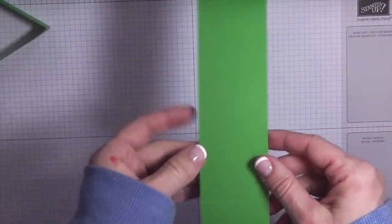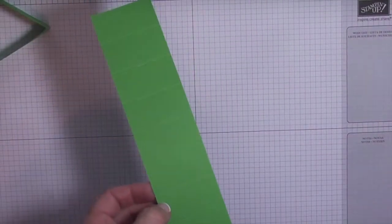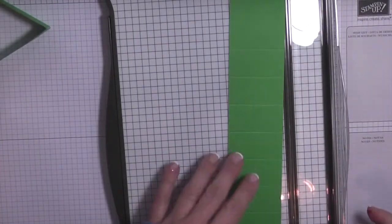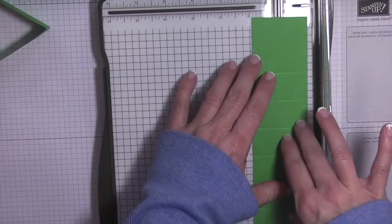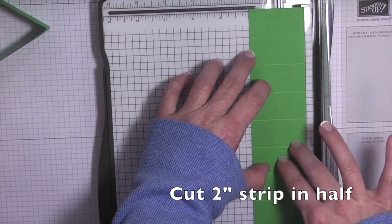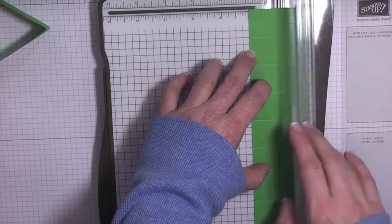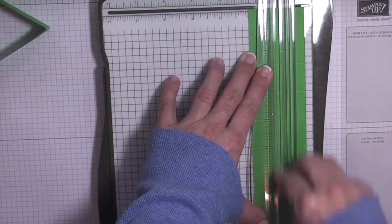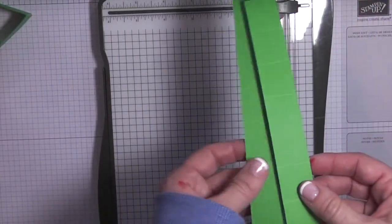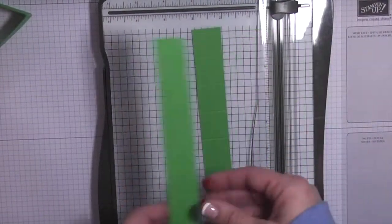The glue's oozing out. Just wipe it off. So there you can see that's the shape of our frame. So I'll just let that sit for a second. Now what we're going to do is we're going to cut this strip in half. So get out your Stampin' Trimmer.